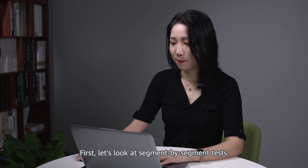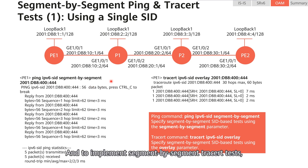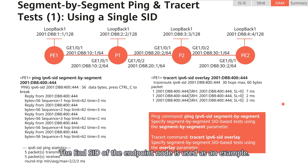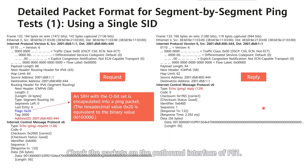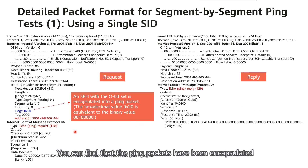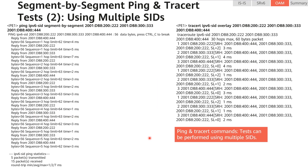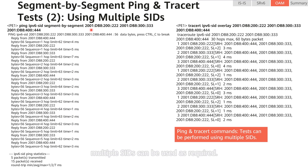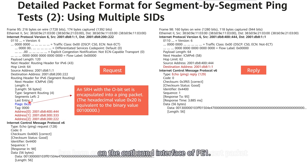For segment-by-segment tests, specify the segment-by-segment parameter for PIN tests and the overlay parameter for TRACERT tests. The End SID of the endpoint node is used as an example; in practice, you can perform tests using the SID of any node on the path. Checking packets on the outbound interface of PE1 shows that the PIN packets have been encapsulated with the SRH and that the O-bit has been set. This is the same for TRACERT packets. In segment-by-segment test scenarios, multiple SIDs can be used. An SRH with the O-bit set and carrying multiple SIDs is encapsulated into each PIN and TRACERT packet on the outbound interface of PE1.